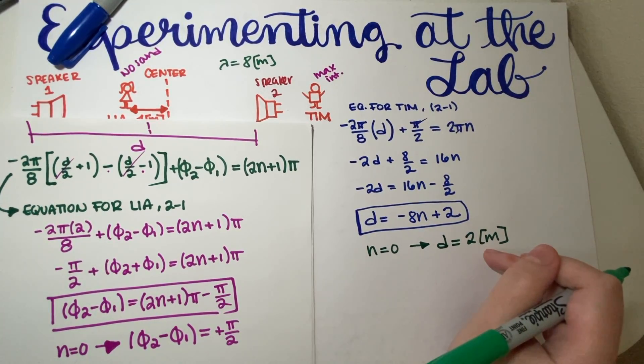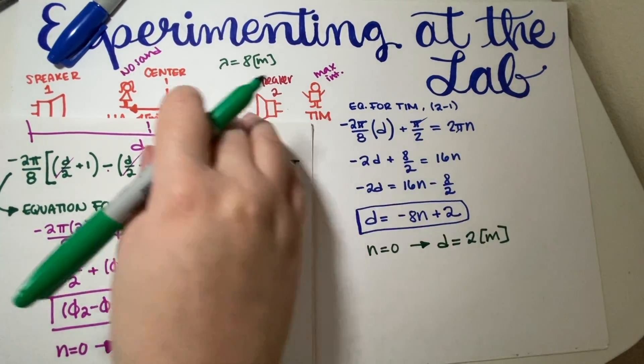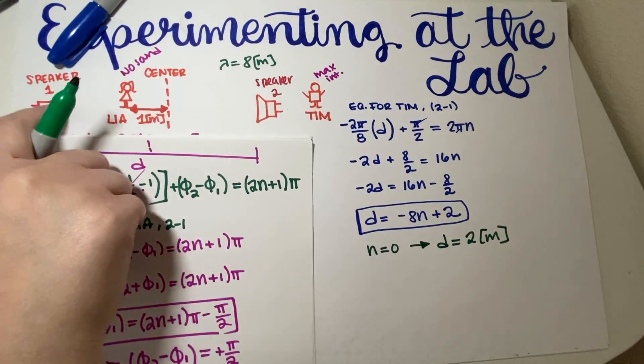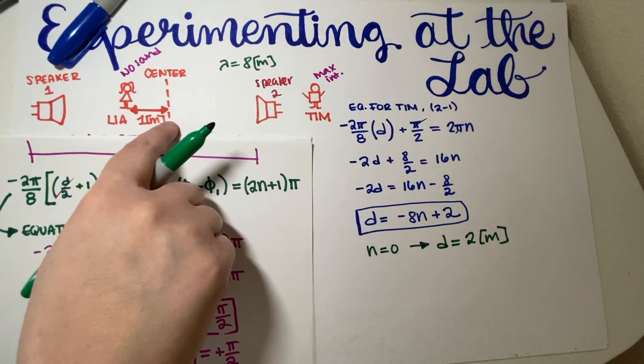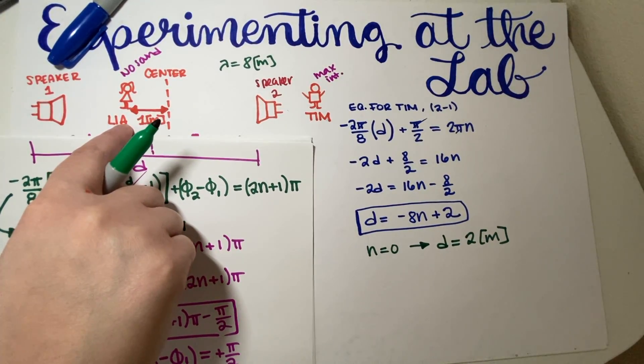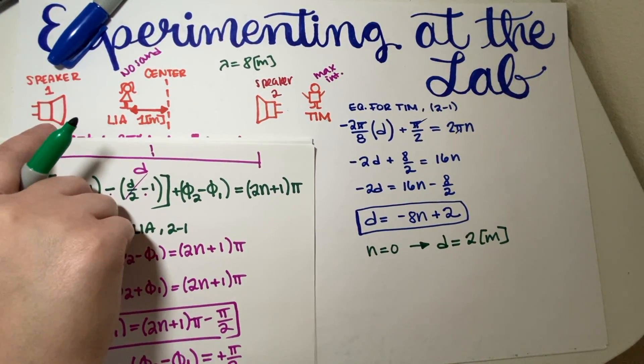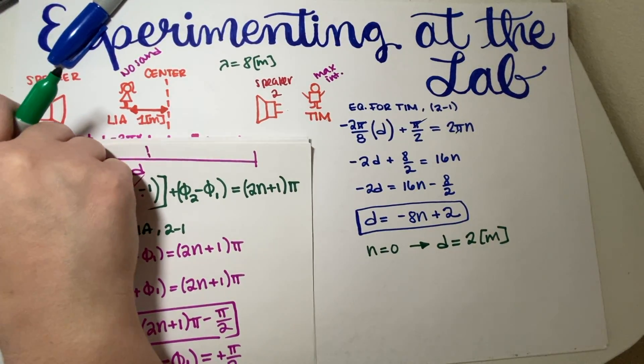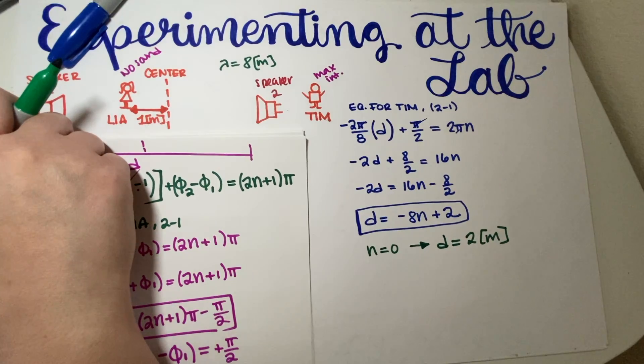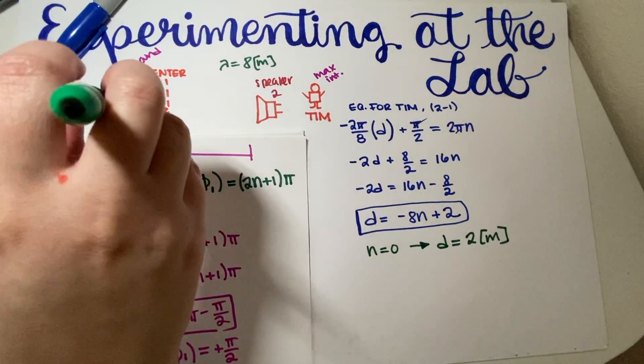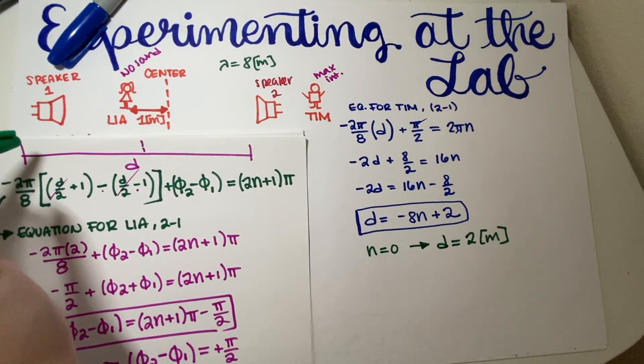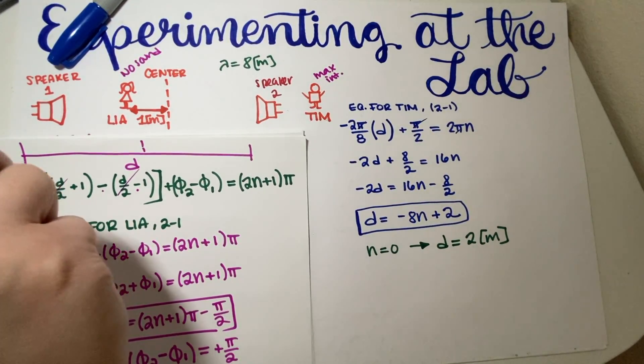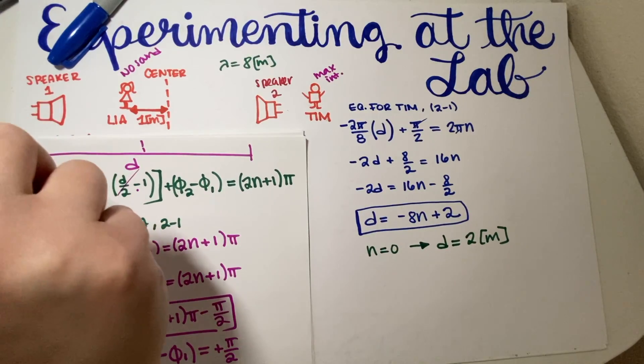So for N is equal to zero, my distance between both of the speakers would have to be 2 meters. So this could be a final answer. However, the only reason why I don't like this final answer is because if this distance is 2 meters and Leah is 1 meter to the left, then Leah ends up being literally on top of the speaker. Now I'm pretty sure that you would still get full credit for this, but I just feel like Leah is not on top of the speaker. Again, I am pretty sure you get full credit, but I don't like negative answers and I don't like Leah standing on top of the speaker.